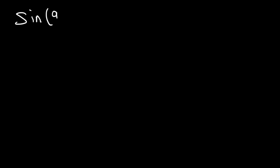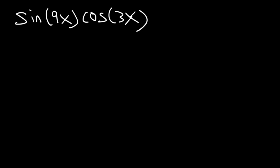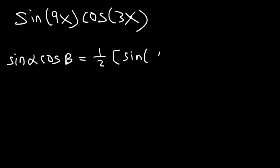Let's try another example: sine 9x times cosine 3x. Feel free to pause the video and use the product-to-sum formula to simplify this expression. The equation we need is sine alpha cosine beta, equal to one half times sine(alpha plus beta) plus sine(alpha minus beta).